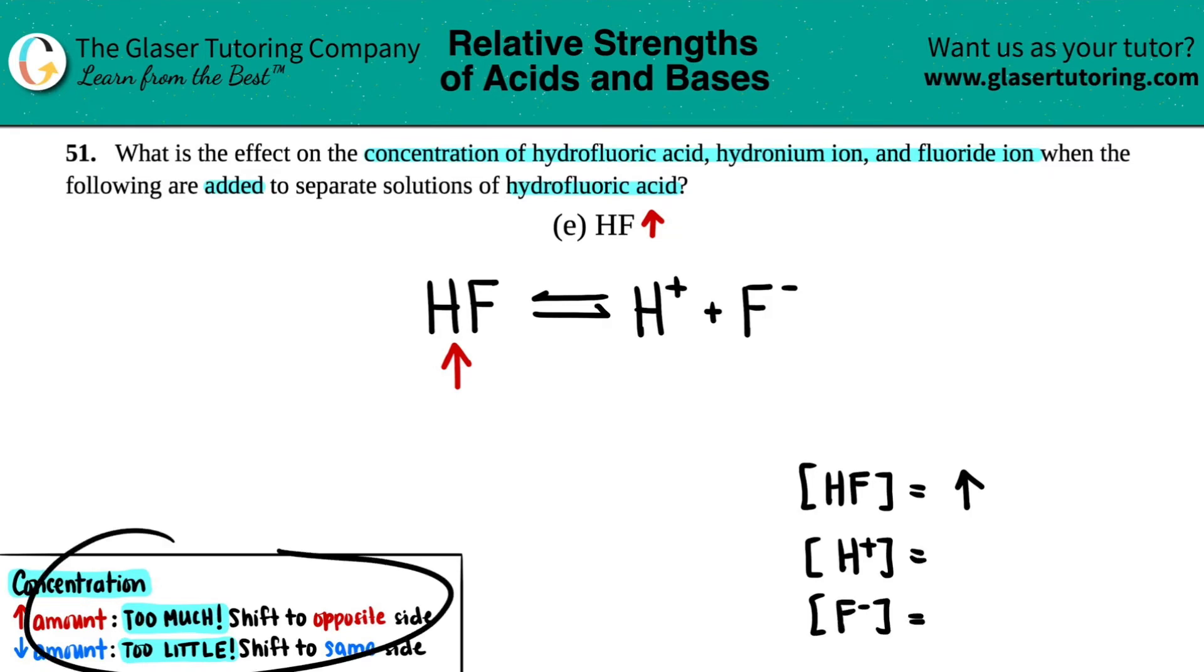This comes from Le Chatelier's principle. If you have too much of an amount, you're always going to shift to the opposite side. Since the increase is on the left side, the predominant reaction is going to shift to the products.